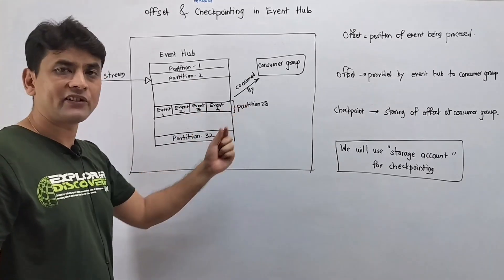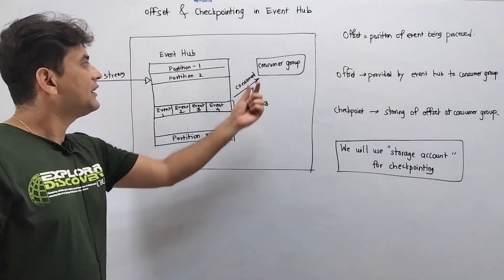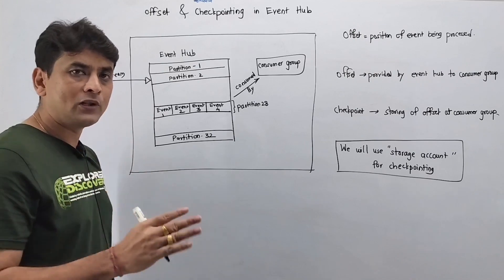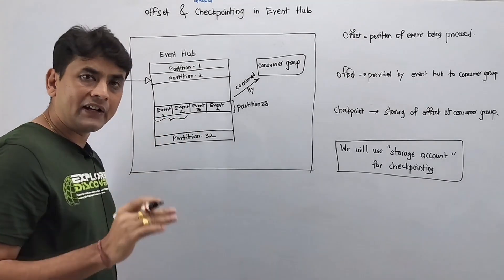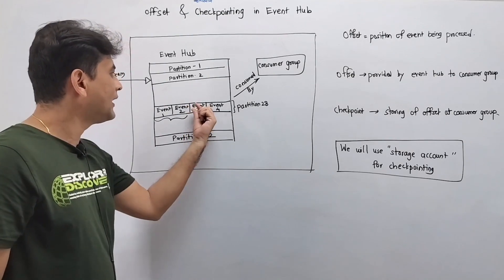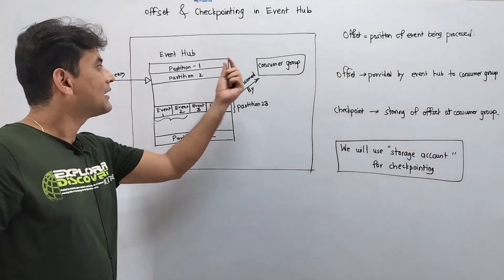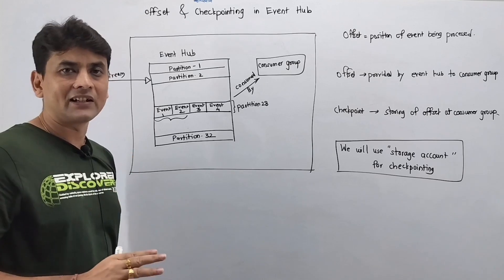Now this consumer group has successfully consumed event one and two, and now it is about to consume event number three. But this consumer group now gets disconnected or it goes down.